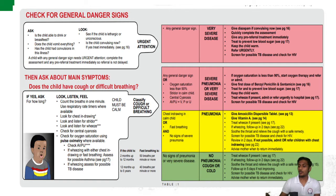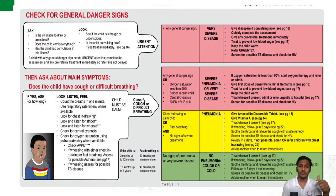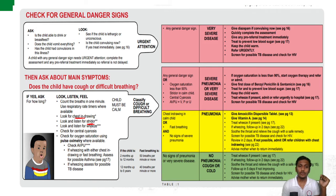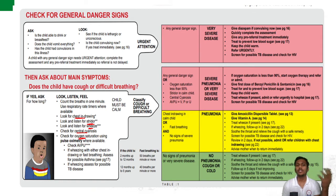Regarding IMNCI guidelines for pneumonia in detail: first look for cough or cold in the child, and also look for tachypnea — count the respiratory rate. Then look for the important finding of chest indrawing. Listen for stridor, which is noisy breathing mostly manifest in upper or lower respiratory tract infections. Also look for wheeze to rule out asthma, check for central cyanosis as an indication of hypoxemia, and monitor oxygen saturation using a pulse oximeter.